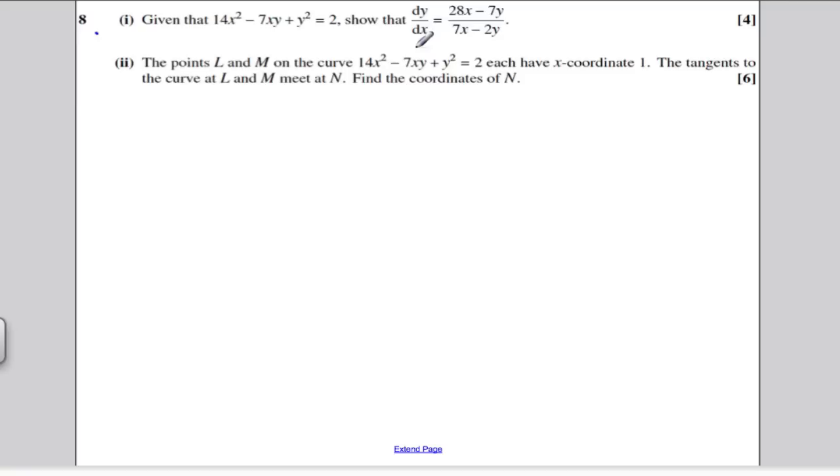Part 2 tells us that there are points on the curve L and M that have x-coordinate 1. The tangents to these curves meet at N. Find the coordinates of N. So straight away, I know the x-coordinate of L and M is 1. I should find out the y-coordinate. When x is 1,